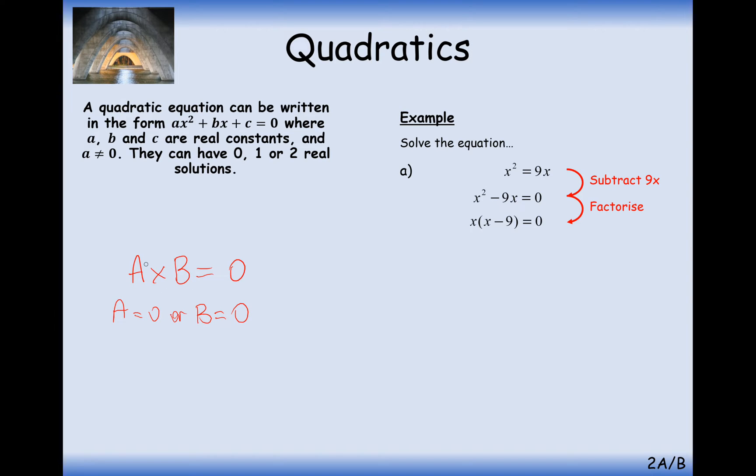Now we're back at this scenario here. Effectively, this x at the front here is our capital A, and this x minus 9 here is our capital B. If these two expressions have multiplied to make a zero, then one of these expressions must have been zero itself. So either x equals zero or x minus 9 equals zero, in which case x equals 9 itself. So here we've solved the equation. We've got two answers here. Generally, not always, but generally we get two answers when we solve quadratic equations. x equals zero and x equals 9.